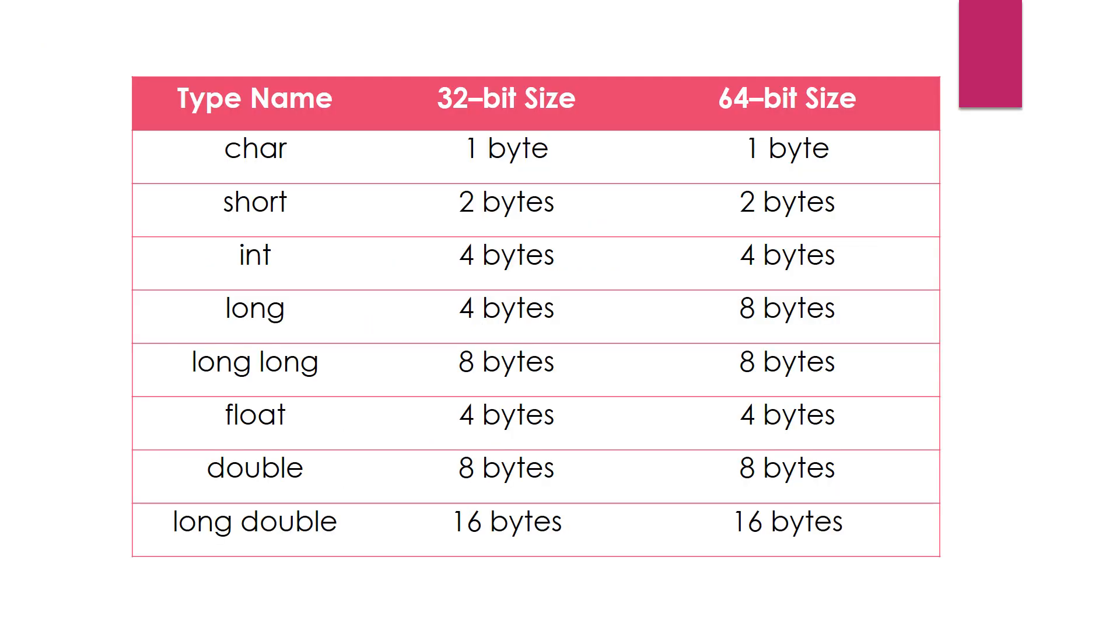The size occupied by each of the data type is mentioned in this chart. Let's assume we are working on a 32-bit processor where 1 byte is required to store a character type variable and 4 bytes for integer type variable.